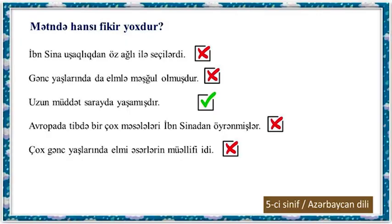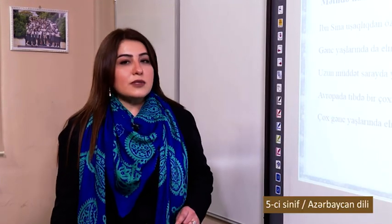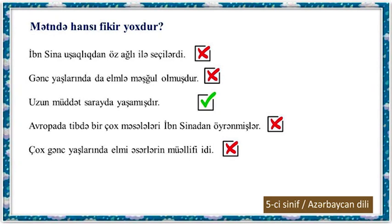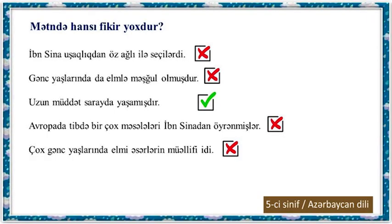Which idea is NOT in the text? Ibn Sina stood out from childhood for his intellect — this idea is in the text. He was engaged in science in his youth — yes, we read in the text that at age 16 Ibn Sina spent entire days in libraries, and after coming home continued reading books and studying science; he even writes in his memoirs that during the short time he slept at night, he saw the problems he was thinking about in his dreams. 'He lived at court for a long time' — this idea is NOT in the text, because we see that rulers invited him to court due to his skill as a doctor, but he always avoided living at court. He only served briefly as vizier in Hamadan. Europeans learned many things in medicine from Ibn Sina — this is in the text. He was the author of scientific works from a young age — also in the text; we see his authorship of scientific books attributed to age 20.